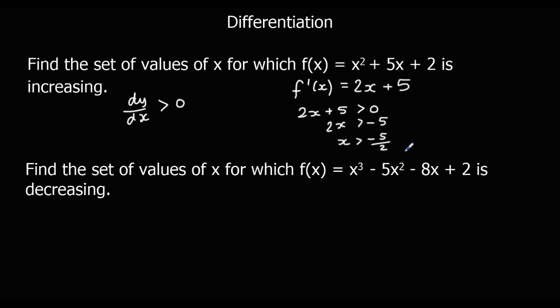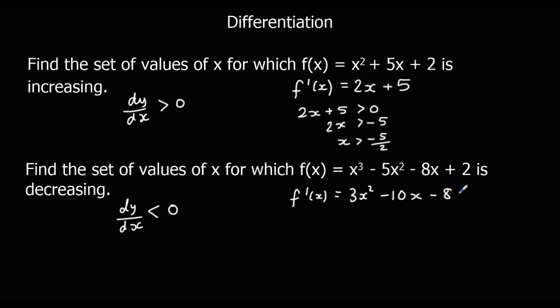The next question says: find the set of values of x for which this function is decreasing. So it's where dy/dx is negative, less than zero this time. First step, we need to differentiate it — find the gradient function. Our dy/dx, or f'(x), is found by multiplying by the power and taking one off the power. So we should get our differentiated function as 3x squared minus 10x minus 8. Now we need to make it less than zero.